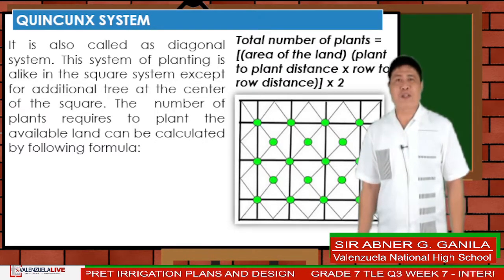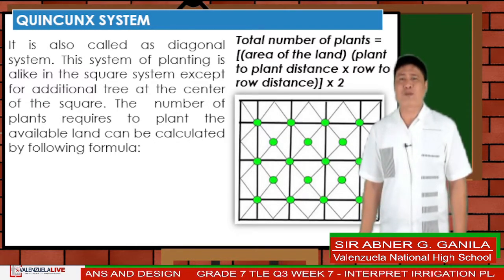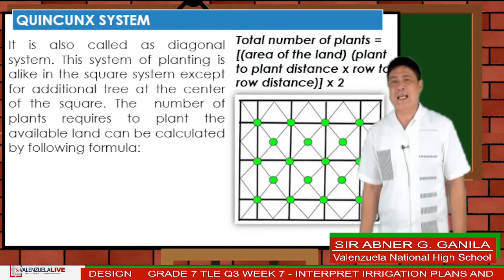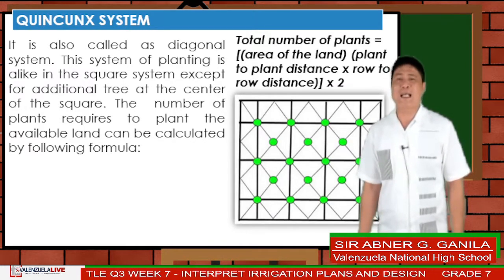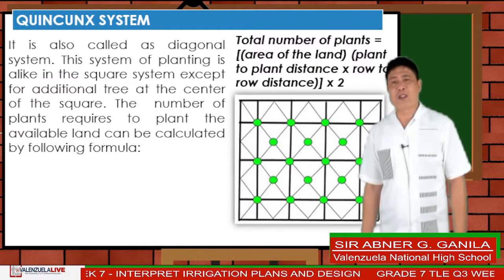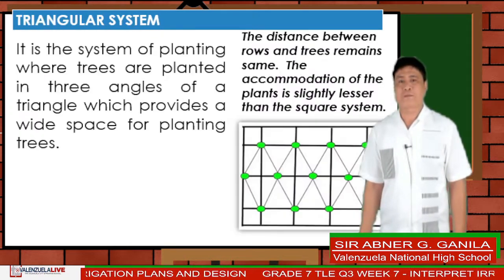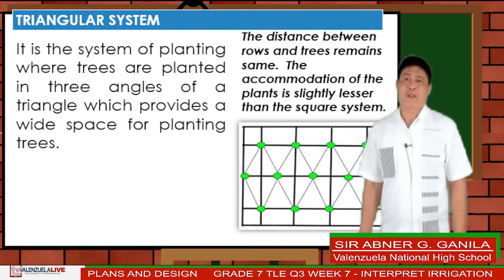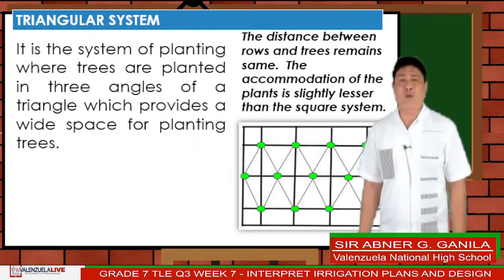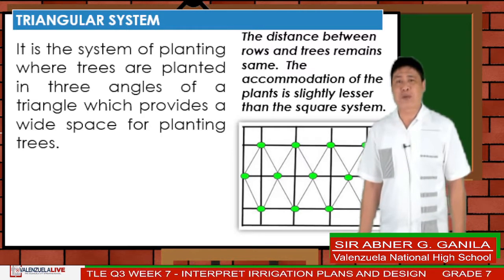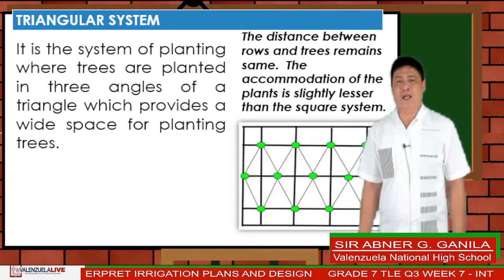Queen count system, also known as diagonal system: it has been developed to utilize the space between trees that remains unutilized in the square system. Planting is done like the square system except an additional plant is placed at the center of the square. The main crop is called the primary crop and the filler crop is called secondary or supplementary fruit crop. In the triangular system, trees are planted at three angles of a triangle, providing wide space. The distance between rows and trees remains the same.